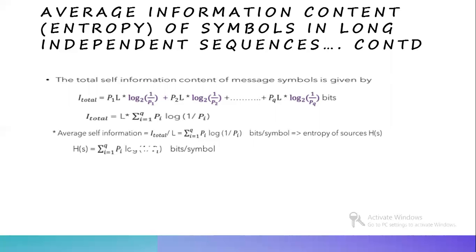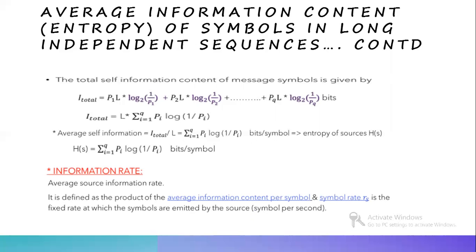Next is information rate. Average source information rate is defined as the product of the average information content per symbol and symbol rate RS. Symbol rate RS is the fixed rate at which symbols are emitted by the source, represented in symbols per second. Information rate is RS equal to small rs into H(S), in bits per second.